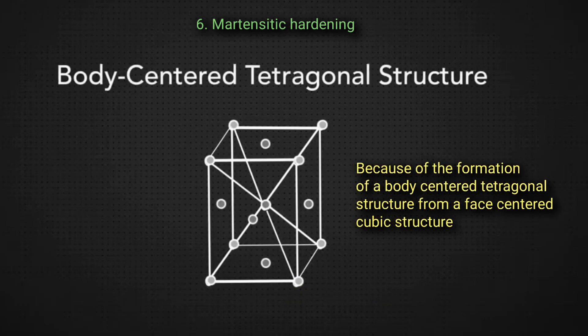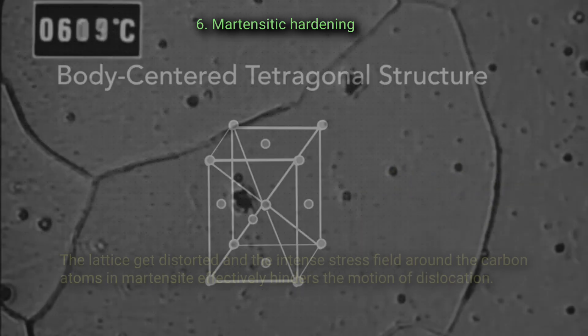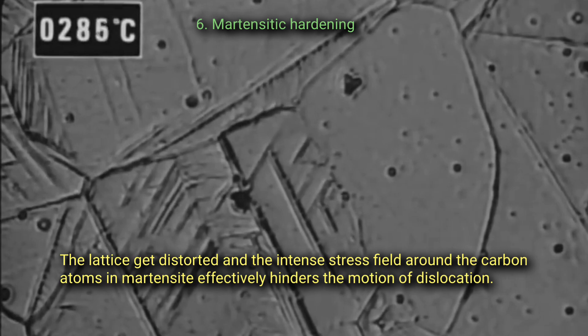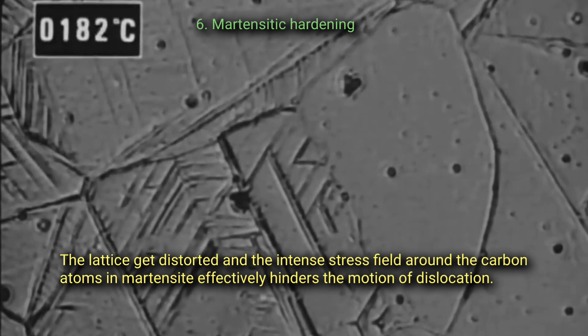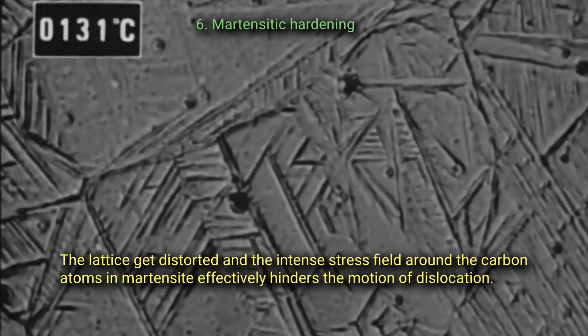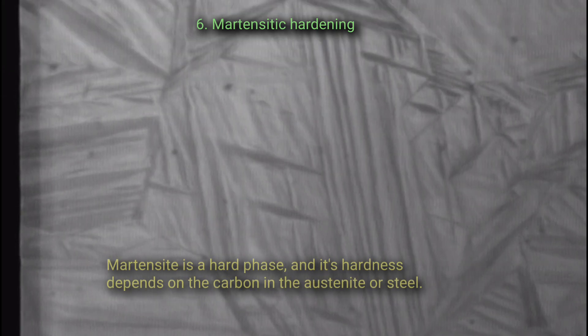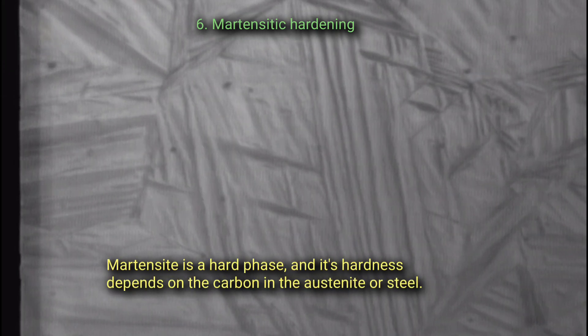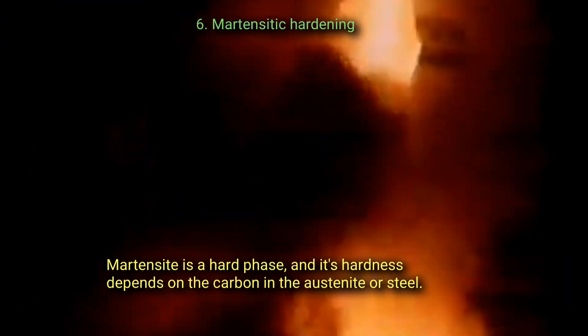Because of the formation of a body-centered tetragonal structure from a face-centered cubic structure, the lattice gets distorted. The intense stress field around the carbon atoms in martensite effectively hinders the motion of dislocation. Martensite is a hard phase and its hardness depends on the carbon in the austenite or steel.